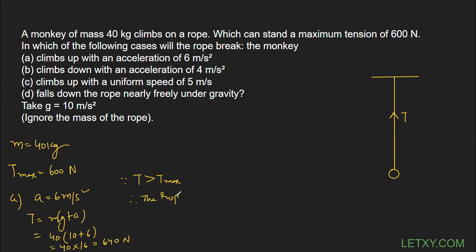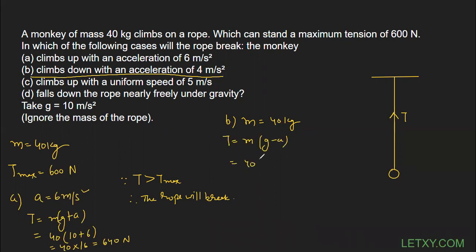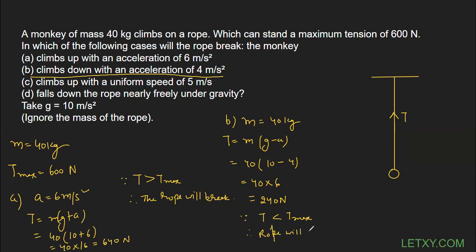Part B: the same monkey, mass 40 kg, climbs down with an acceleration of 4 m/s². The tension formula is T = m(g − a). So T = 40 × (10 − 4) = 40 × 6 = 240 newton. Since T = 240 N is way less than T_max = 600 N, therefore the rope will not break.